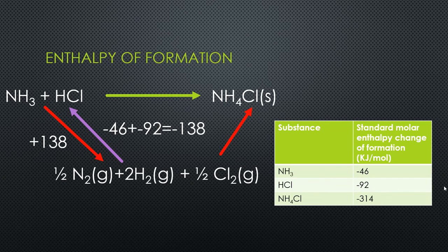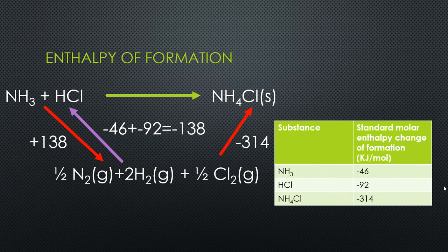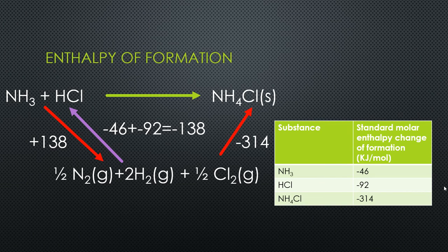Then we can think about the other arrow, which we have to form ammonium chloride. You can just read that straight off the table—that's minus 314. We can mark that on the diagram. We've got those two red arrows marked in, so we've got the thermochemical cycle completed with all the numbers we need.